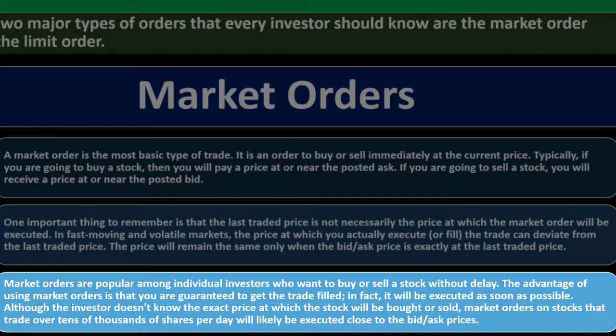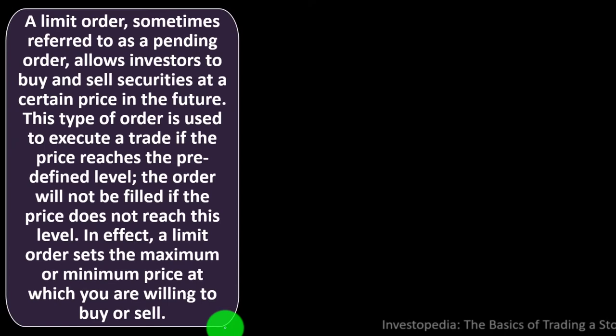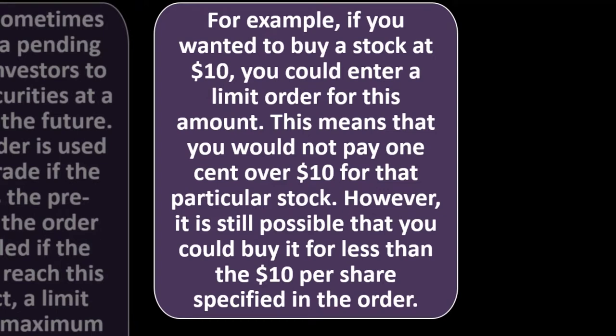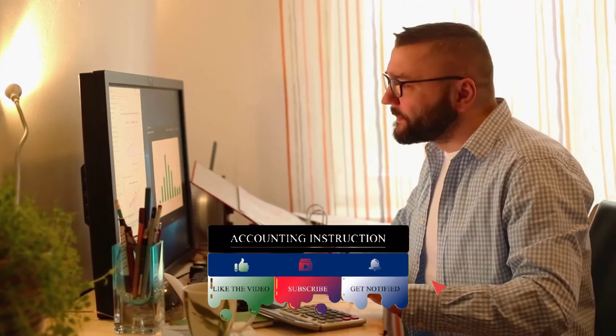Market orders on stocks that trade over tens of thousands of shares a day will likely execute close to the bid-ask price. A limit order — sometimes referred to as a pending order — allows investors to buy and sell securities at a certain price in the future. The order will not be filled if the price does not reach the predefined level. A limit order sets the maximum or minimum price at which you are willing to buy or sell. For example, a limit order to buy at $10 means you will not pay one cent over $10, but you could still buy for less.